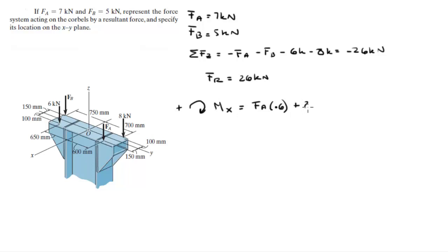Plus 8 times 0.7 that is this force right here times this 0.7 minus F of B times 0.75 that is this F of B right here and this 0.75 right here minus 6 times 0.65. When you add all this together in your calculator, you get that this is positive 2.15 kN meters. Meters because we already converted into meters from millimeters.